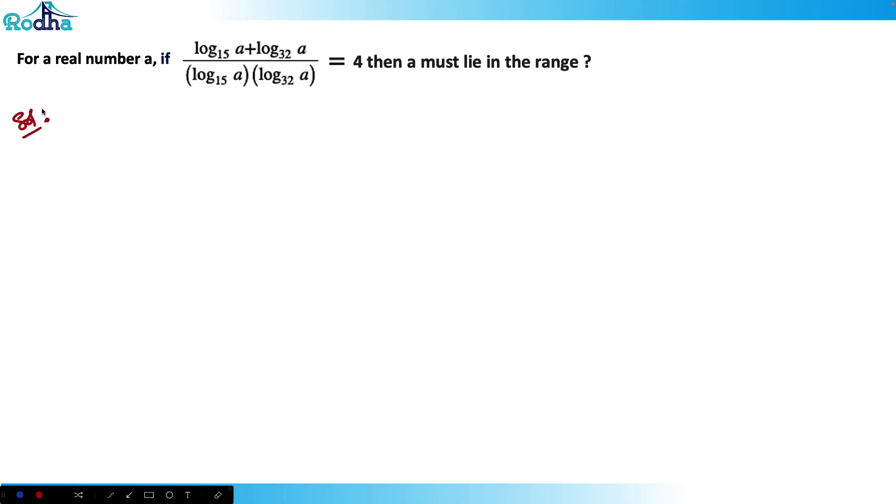Hi guys, let's look at this question from CAT 2021 slot 3 from logarithms. If you observe this form, what is this form? This form is basically x and y and this is xy.